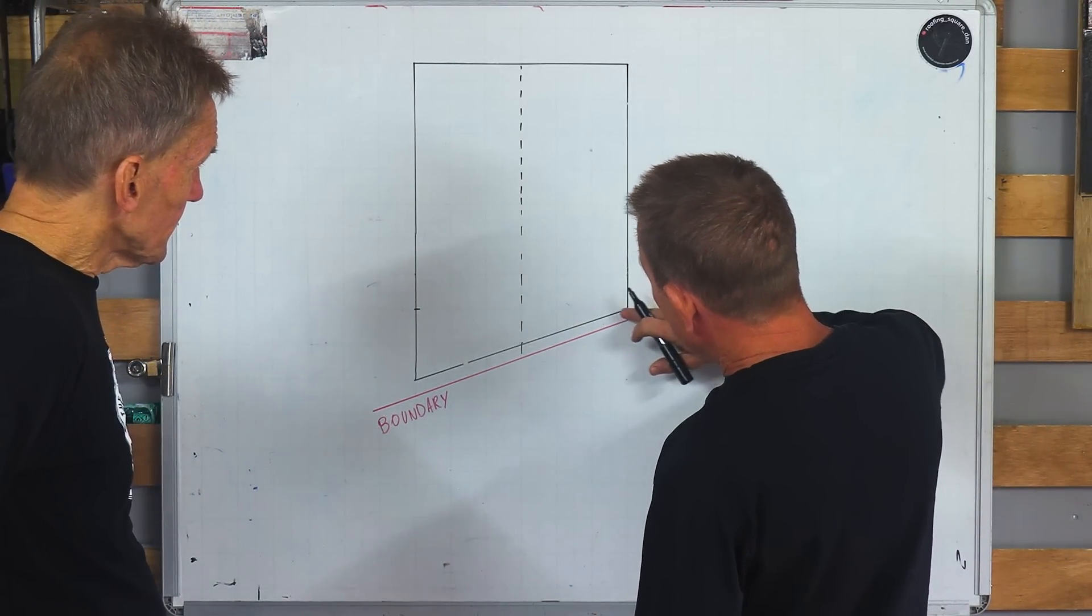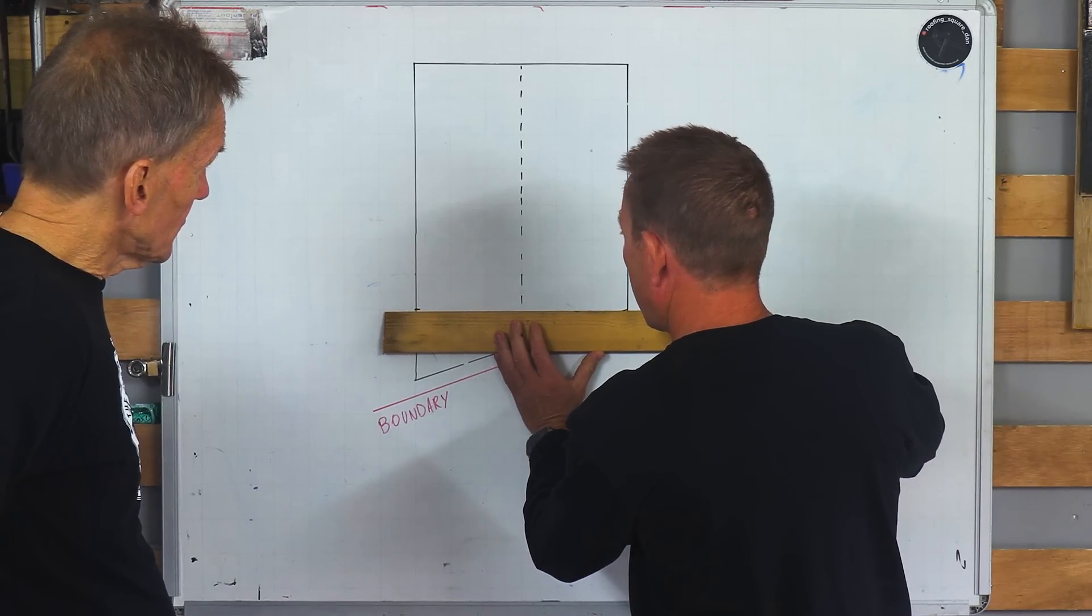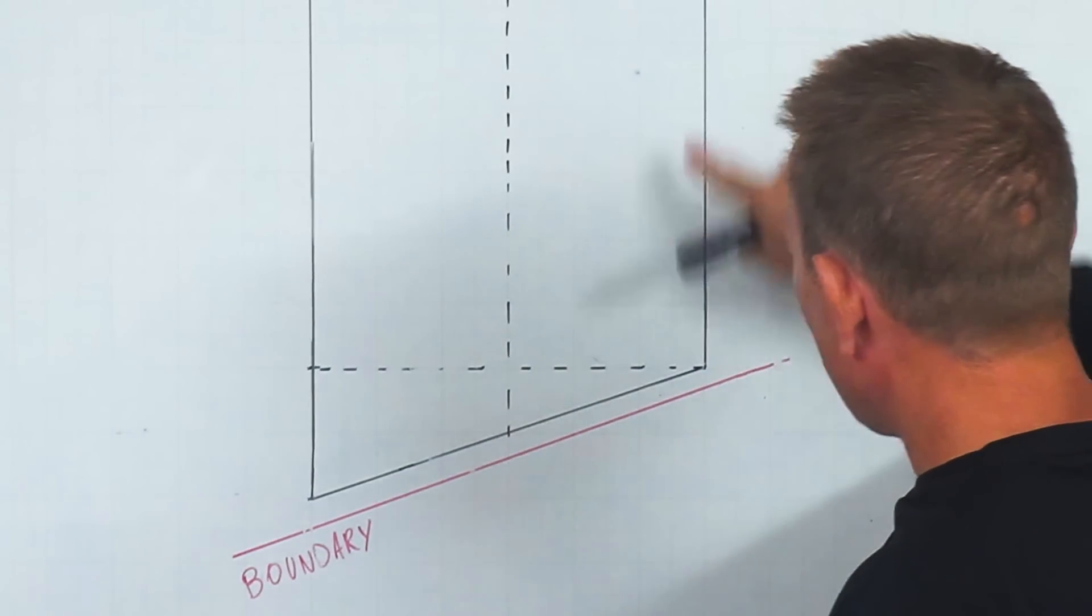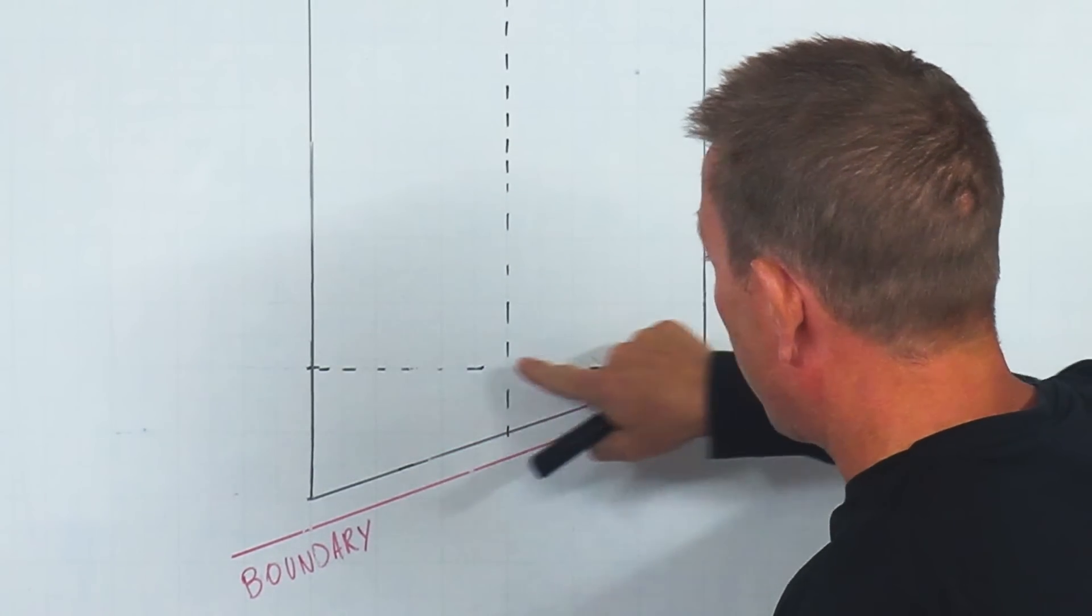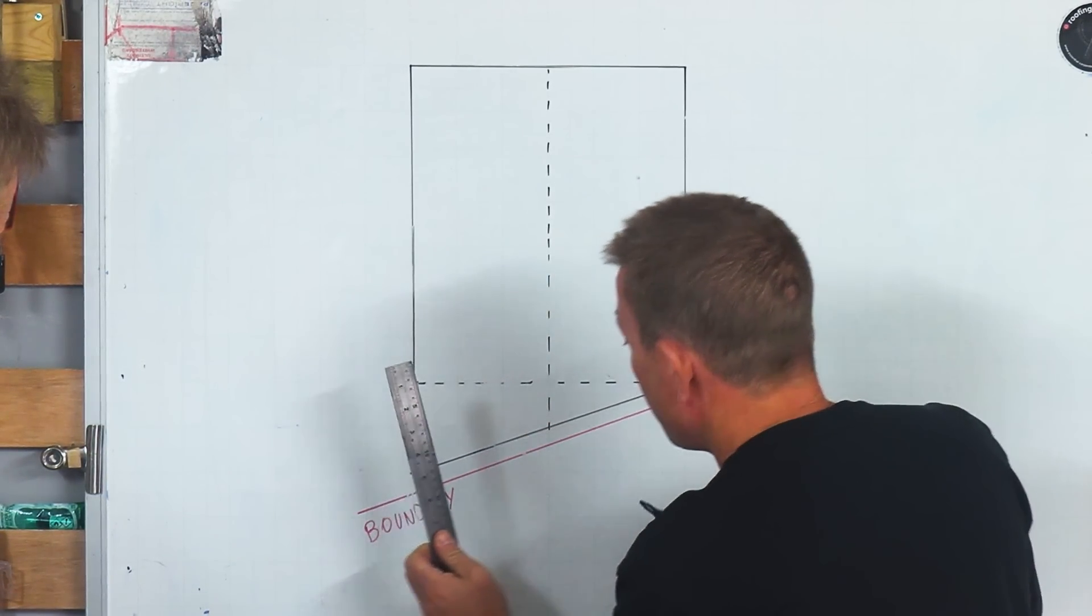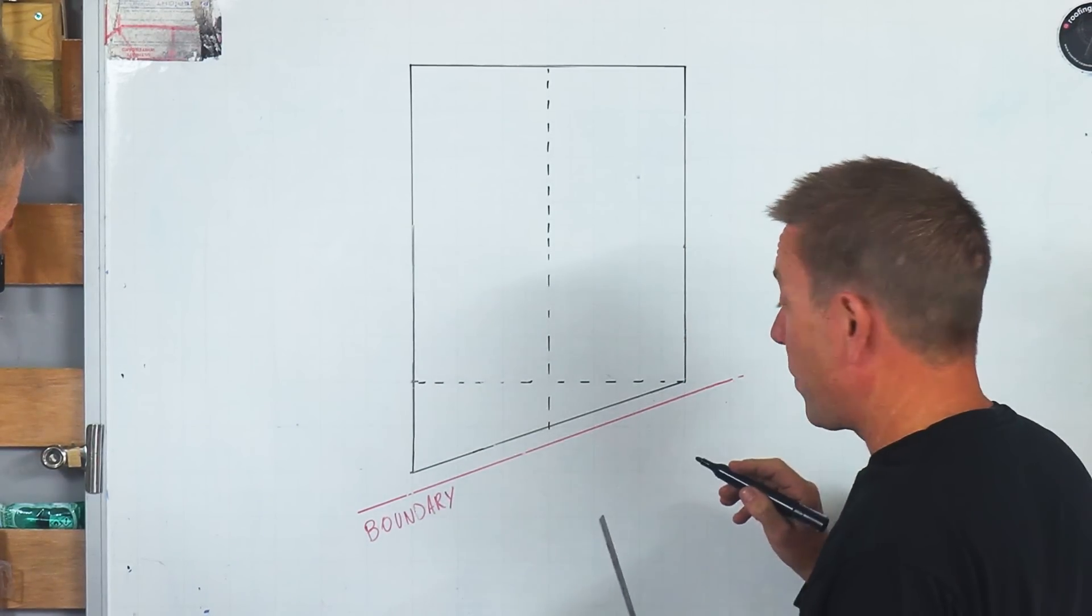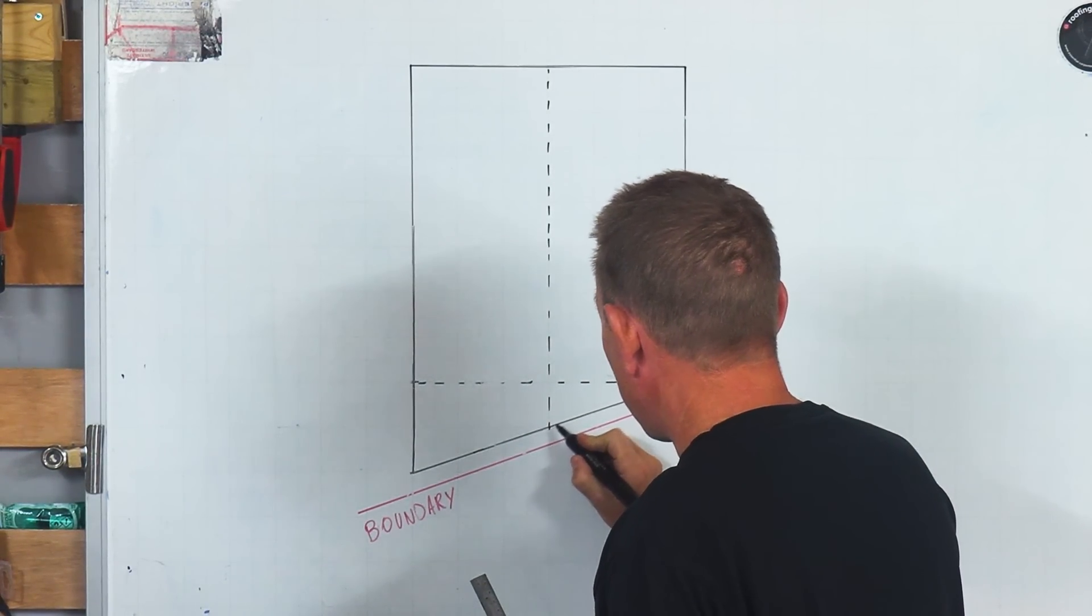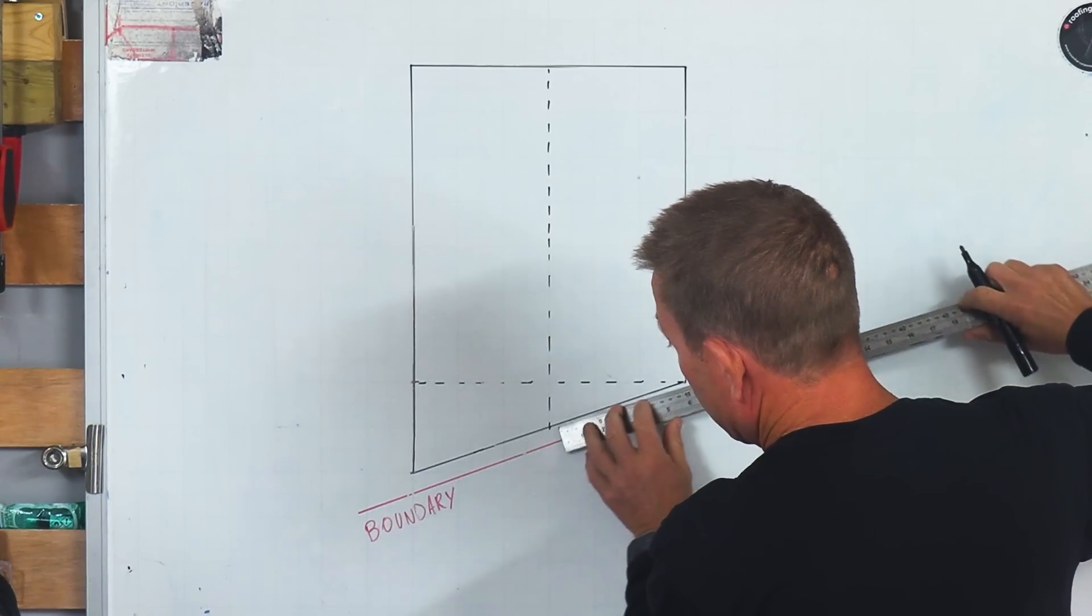So basically we need to square this end off. So we're just going to do a little dotted line through there. Right, so we've got our square line across from the back of the building. This is our offset and on our little scale here we've got a hundred mil.